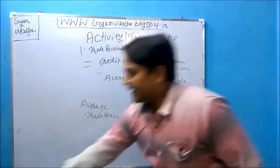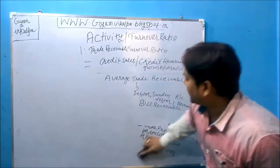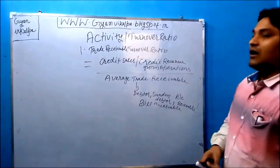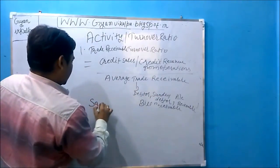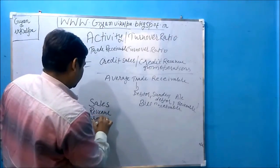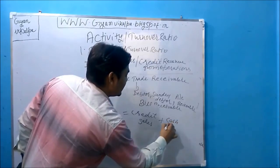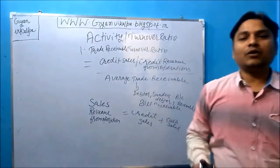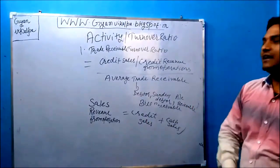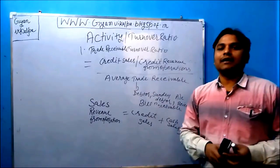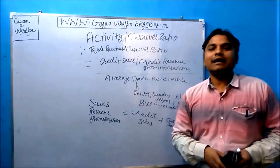Credit sales or credit revenue from operations will be directly given in the question. Sales equals credit sales plus cash sales. Since cash sales don't create debtors, we only use credit sales in the formula. If only total sales are given and it is not clear whether it is cash or credit, we consider the whole sales amount as credit sales.